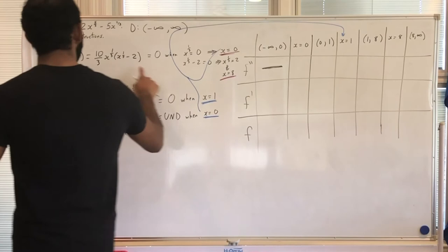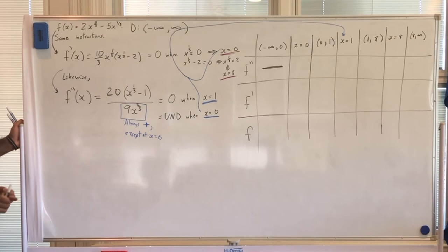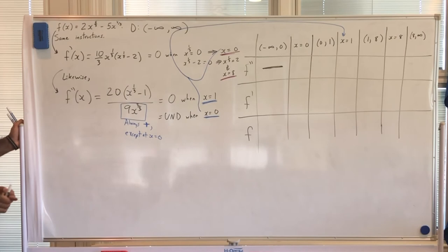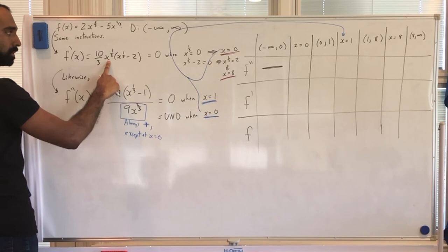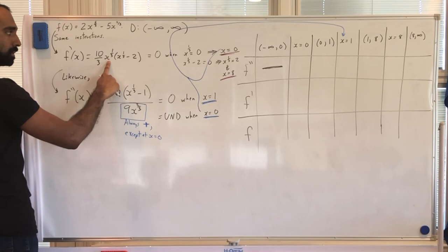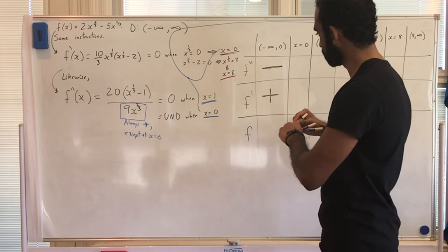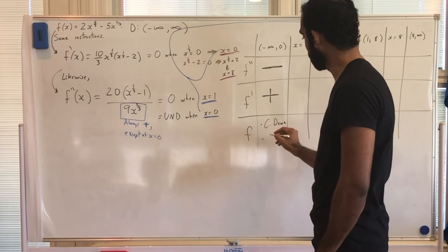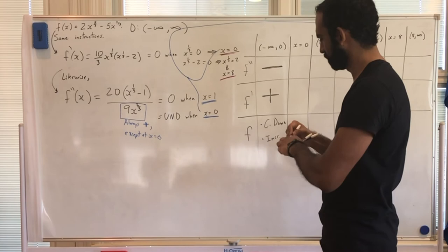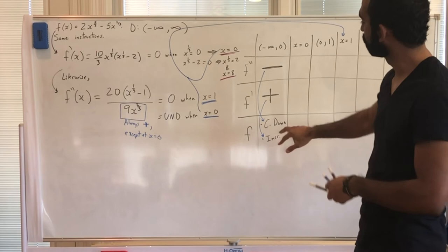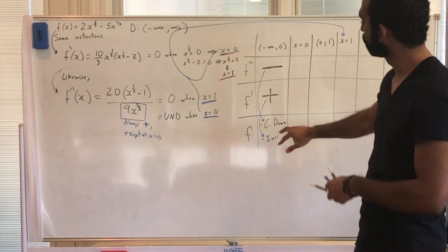For f' on (−∞, 0), using the factored form with x = −10: cube root of −10 is negative; negative minus 2 is negative; negative times negative is positive; times the positive (10/3) factor — so f' is positive. So on (−∞, 0): f is concave down but increasing.